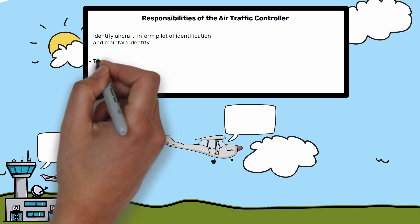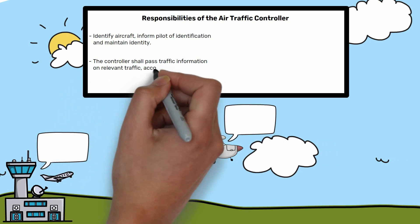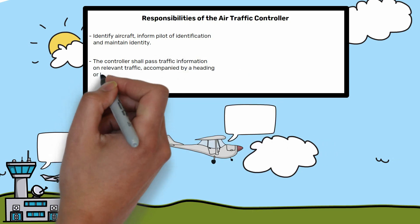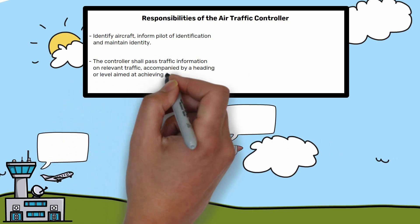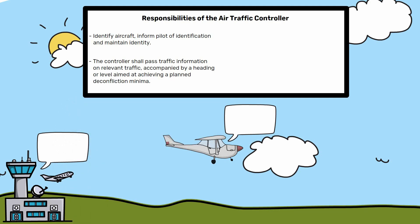A controller shall provide traffic information accompanied with a heading or level aimed at achieving a planned deconfliction minima. An example of this might be: Golf Bravo Charlie Tango Foxtrot, avoiding action, turn left immediately heading 340 degrees.